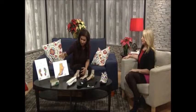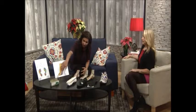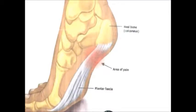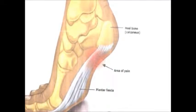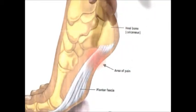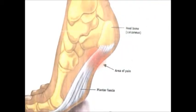Plantar fasciitis is an inflammation of the plantar fascia, which is a structure found on the bottom of the foot. I actually have a diagram here — you can see it originates at the heel bone and fans out and attaches into the base of the joints in the ball of the foot. Plantar fasciitis is essentially an inflammation associated with micro tears, and it generally occurs closer to the heel bone.